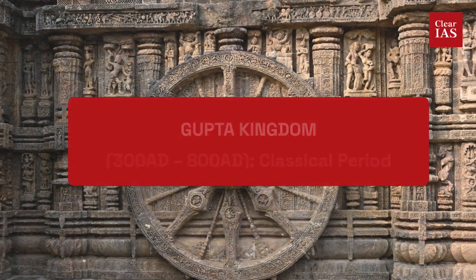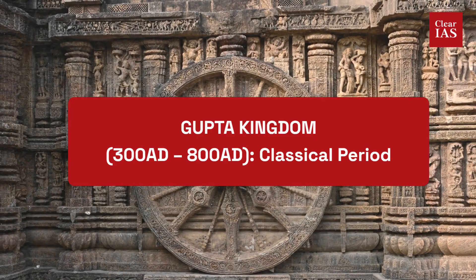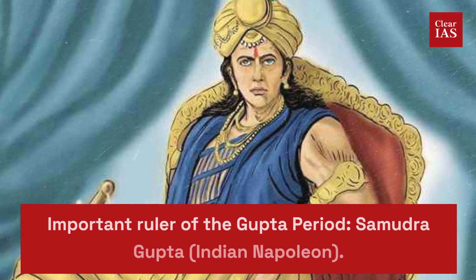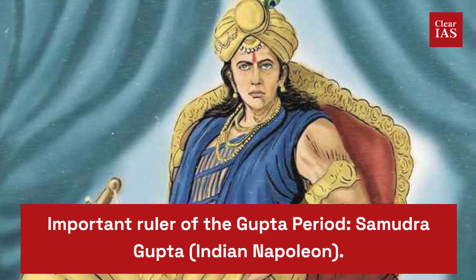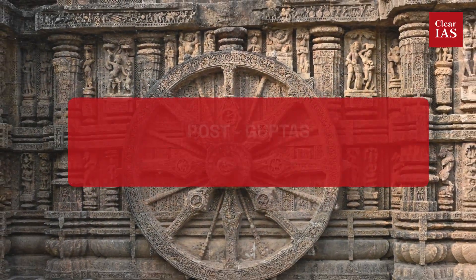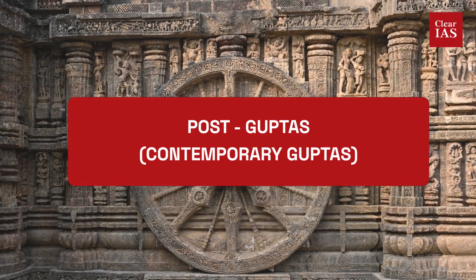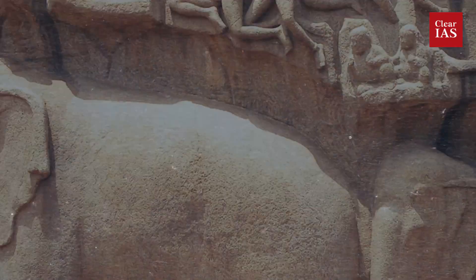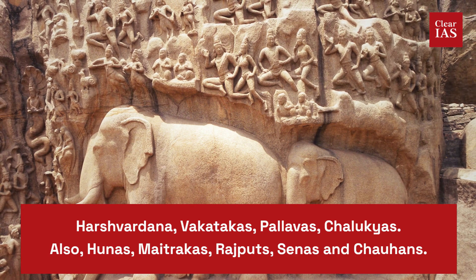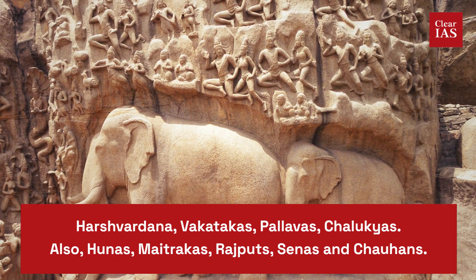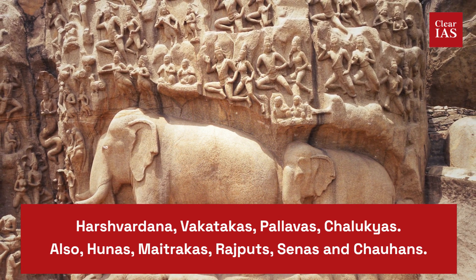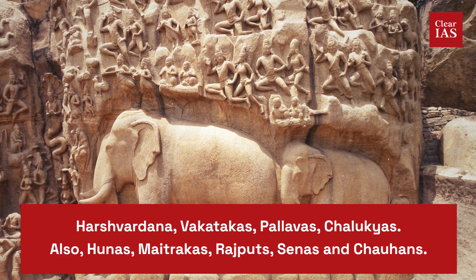The Gupta Kingdom lasted from 380 to 800 AD. The important ruler of the Gupta period was Samudragupta, who was also known as the Indian Napoleon. The Post-Guptas, also known as the Contemporary Guptas, include Harshavardhana, Vakatakas, Pallavas, Chalukyas, and also Hunas, Maitrakas, Rajputs, Senas, and Chauhanas, who also belong to the Post-Gupta period.